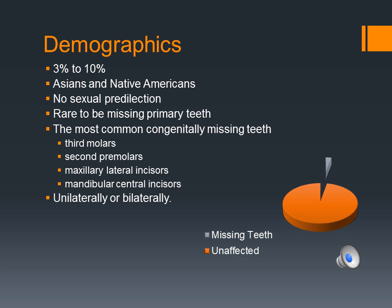Hypodontia is found in three to ten percent of the population. It is more prevalent in Asians and Native Americans with no sexual predilection. Although it is rare in children to be missing primary teeth, those that are tend to have more than one missing tooth. When a child is missing a single primary tooth, it is usually the maxillary central incisor.